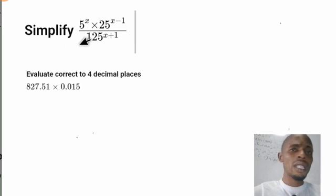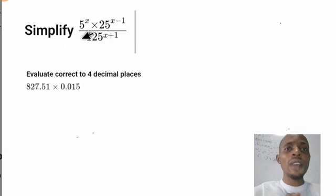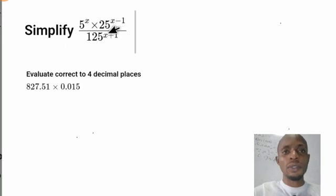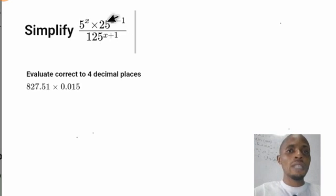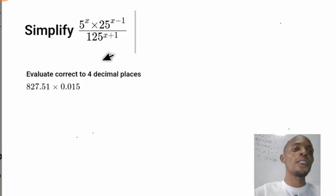The question says: simplify 5^s multiplied by 25^(s minus 1), divided by 125^(s plus 1). We want to simplify this. This is pure indices.